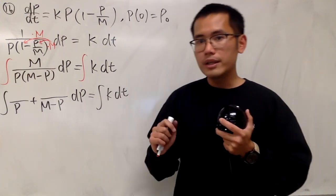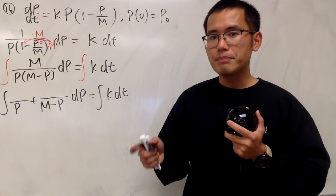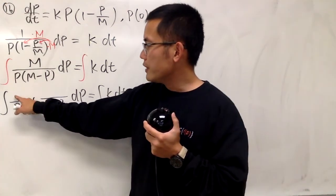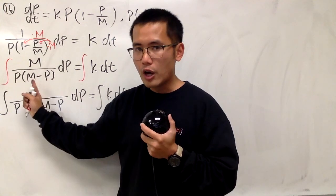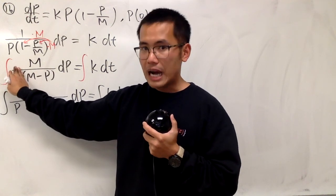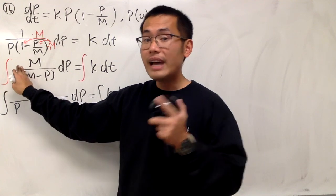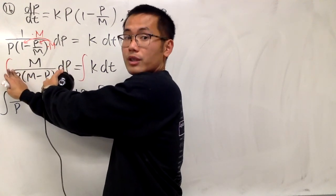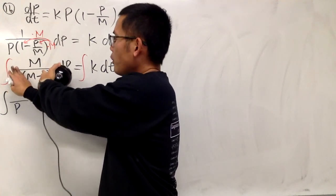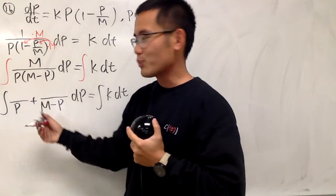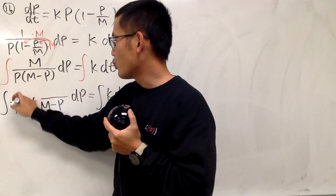Now we'll do the partial fractions by the cover-up. To figure this out, I will come back to the original, cover the same denominator, which is the p. And how can we make p equal to 0? p has to be 0. Then we put 0 in here for the remaining p. So we have m over m, which is just 1. So the number that we need is 1.